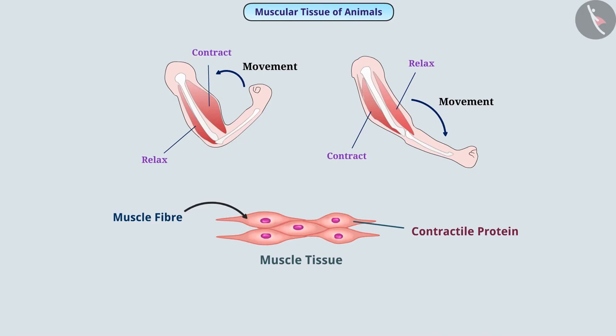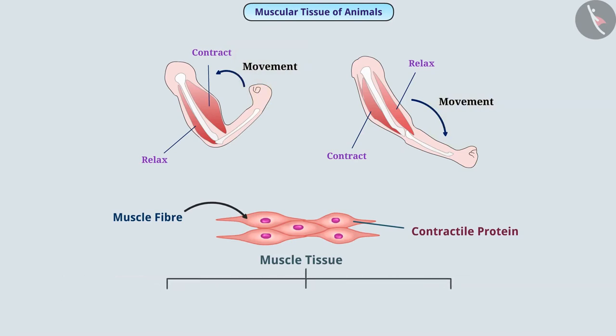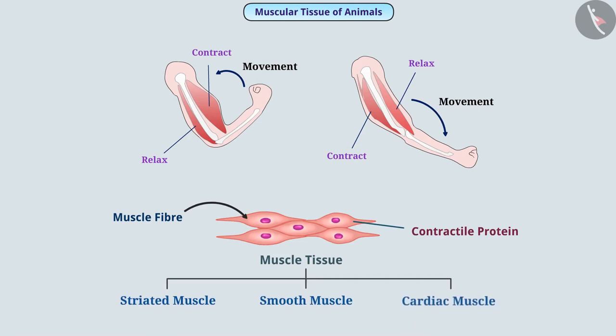On the basis of movement performed by the muscular tissue and its structure, it is classified into striated muscle, smooth muscle, and cardiac muscle.